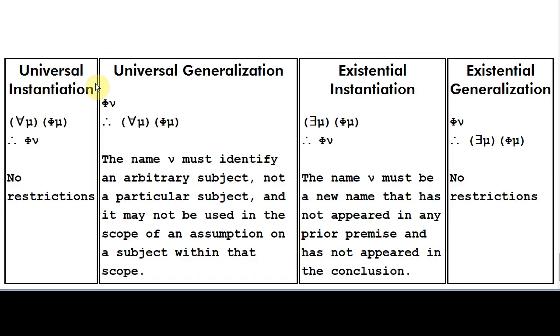In this video, we have just learned about the rule of universal instantiation. It says that we can go from a universal statement to a particular statement. And this rule has no restrictions on it. In subsequent videos, we're going to be learning about other quantification rules, such as universal generalization, existential instantiation, and existential generalization. And some of these have restrictions on them.